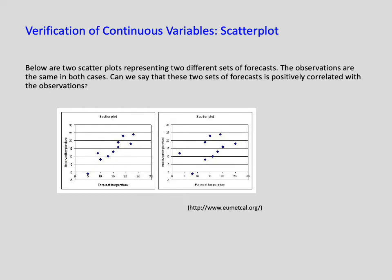A scatterplot can also tell us whether forecasts and observations are linearly correlated — that is, large observation values should correspond to large forecast values. The two scatterplots shown here represent two different sets of forecasts with the same observations. In both cases, lower forecast temperatures tend to be associated with lower observed temperatures. For the left panel, the correlation might be very high, indicating the forecast is well correlated with observations. For the right panel, a positive correlation may exist but it is low and the result doesn't really make sense.